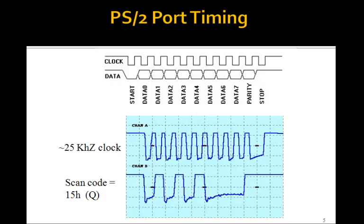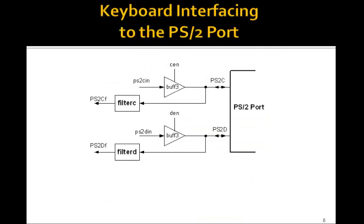Here is a table that lists all of the make codes and break codes for all of the keys on the keyboard. Now, recall from the last lesson the PS2 port timing. The clock and data are both sent from the keyboard, and the data is read on the falling edge of the clock. The clock and data are noisy, so we're going to have to filter it. Coming out of the PS2 port, the clock will go through a filter — we'll call the output PS2CF — and the data PS2D will go through a filter as well. We don't need tri-state buffers for the keyboard. The signals PS2C and PS2D are in our UCF file and are the names of the pins on the FPGA.